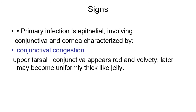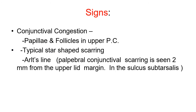Trachoma is characterized by conjunctival congestion. The upper tarsal conjunctiva appears red and velvety and later may become uniformly thick like jelly. You can see papillae and follicles in the upper palpebral conjunctiva. A typical star-shaped scarring pattern is called Arlt's line — palpebral conjunctival scarring seen two millimeters from the upper lid margin in the sulcus subtarsalis.